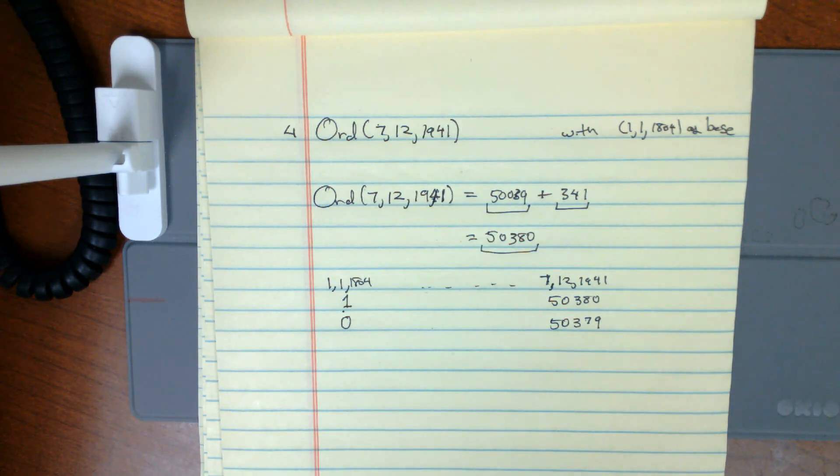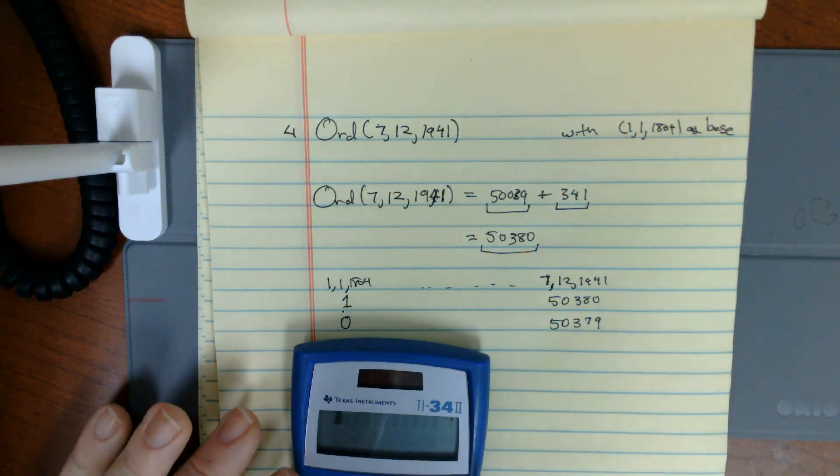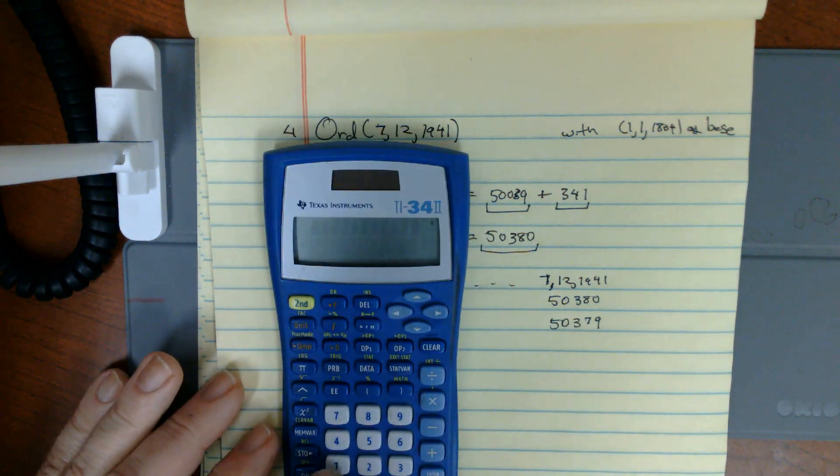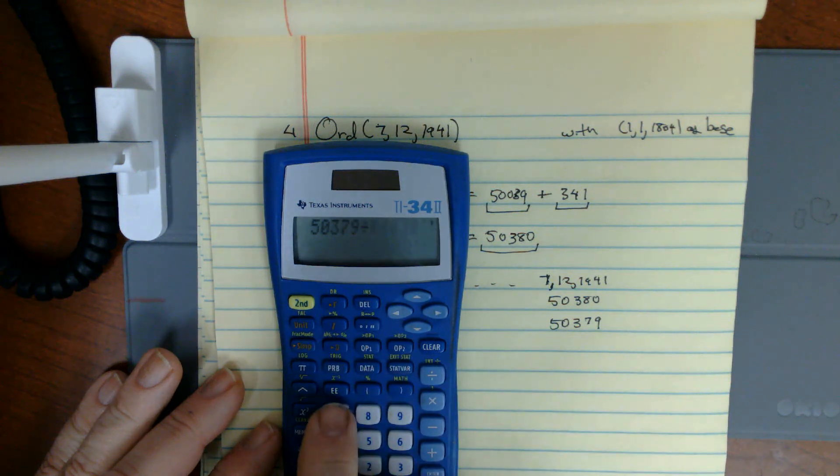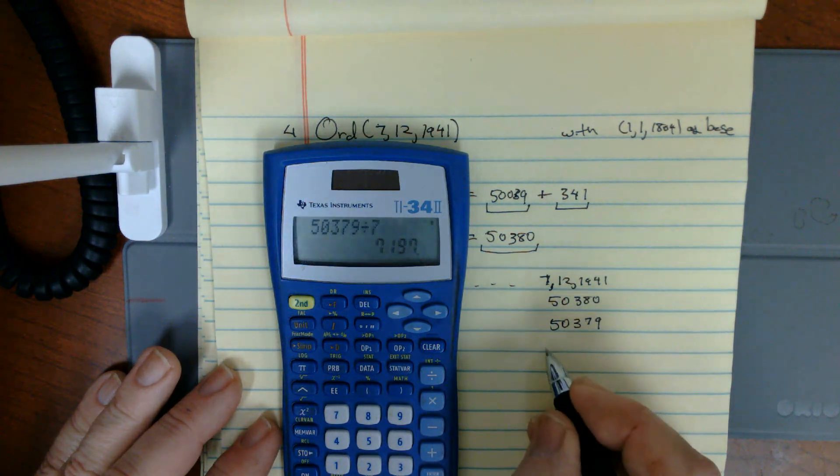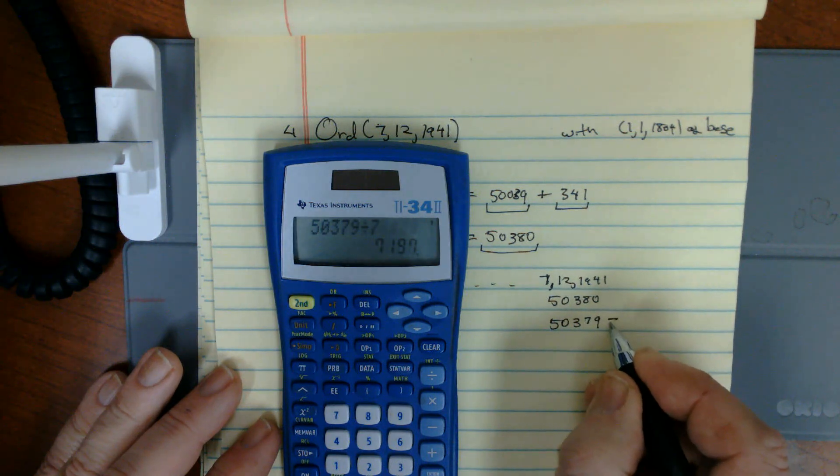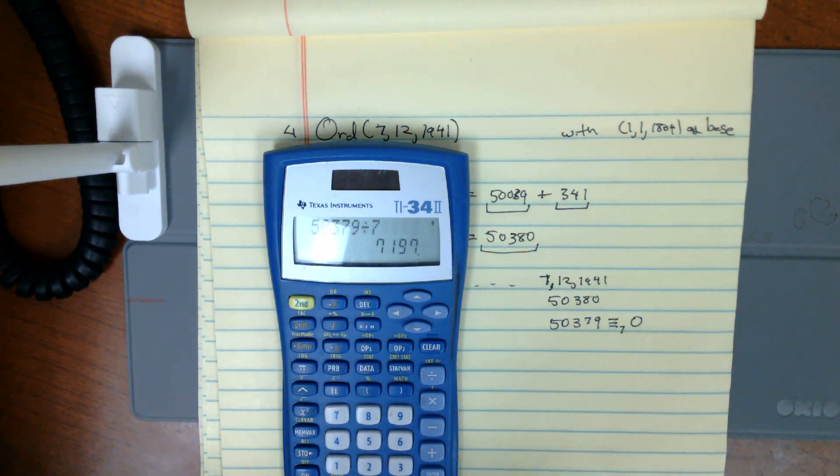I'm going to calculate what this is modulo 7. I divide 50,379 by 7, and it comes out evenly. There is no remainder. So this modulo 7 is equal to 0, therefore it is a Sunday. Therefore this is a way of checking that your calculations work. This is called a benchmark.